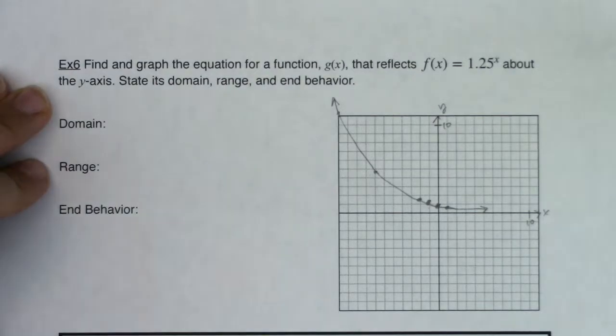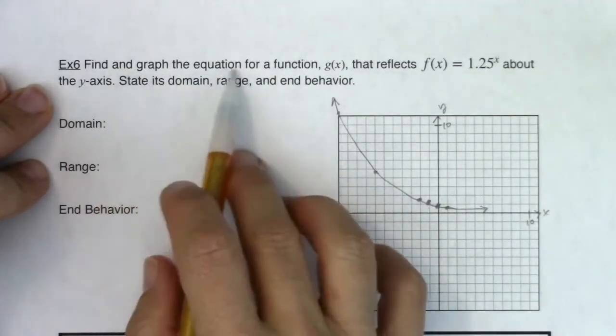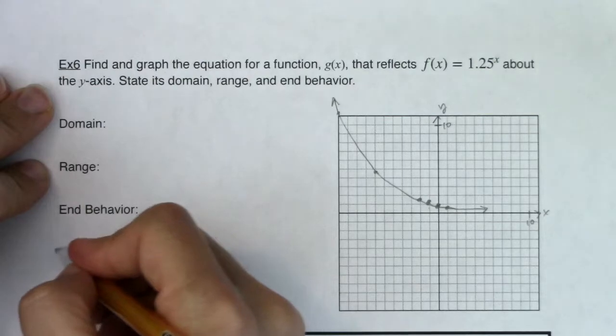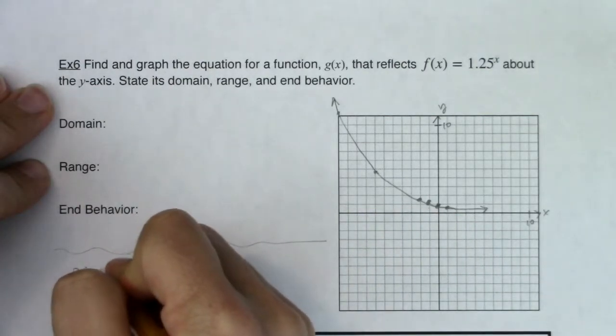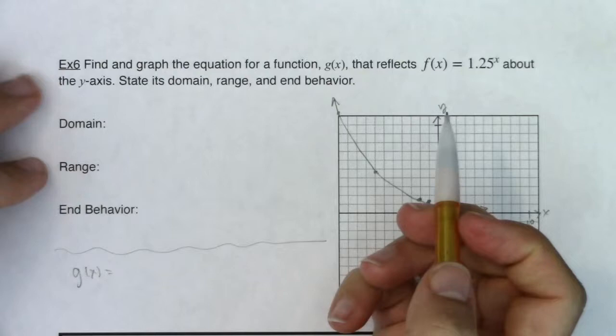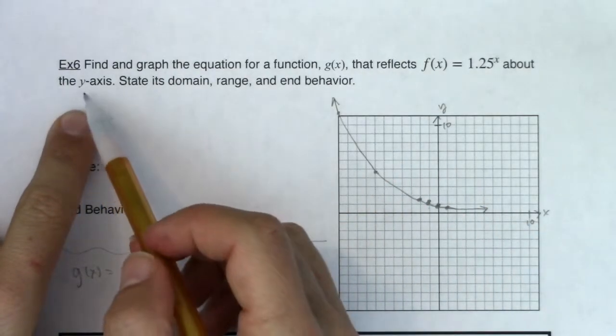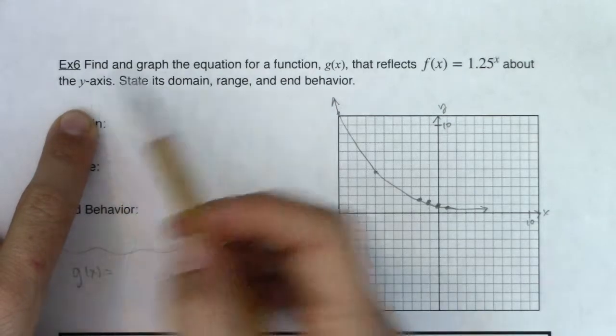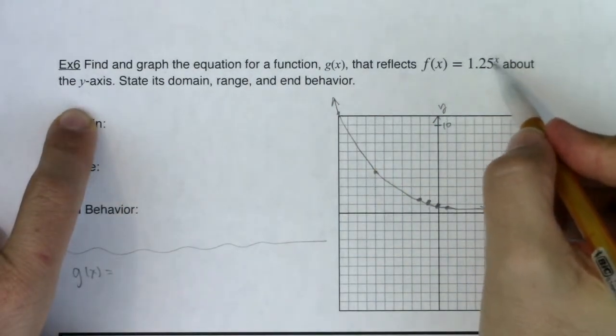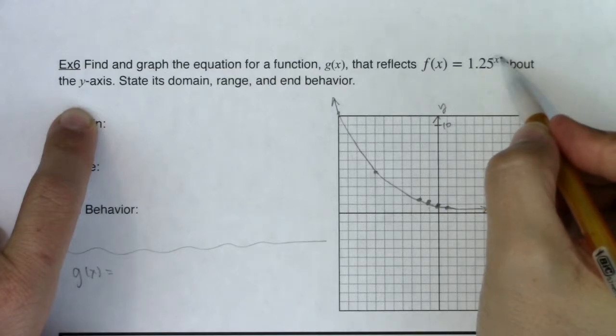So I'm happy with my graph so far, but I was also asked to find the equation. So let me go find this equation, g(x). If you remember from back in section 3.5, when we reflected functions about the y-axis, it changed this x letter here. So anytime you reflect over the y-axis, you're going to change the sign on your x variable.